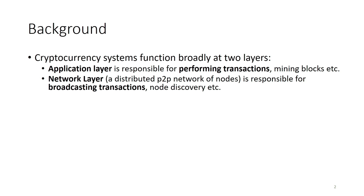Just to give you a brief background: when we talk about cryptocurrency systems, their functioning can broadly be divided into two layers. The first layer is the application layer, which deals with generating transactions, mining blocks, and so on. And then there is a network layer which takes those transactions, broadcasts them to the network, discovers new nodes, and so on.